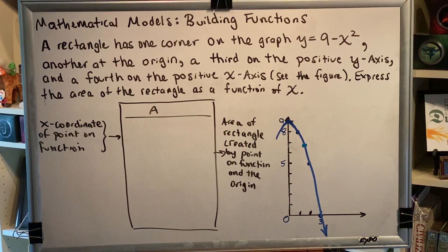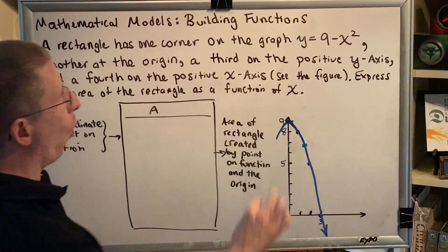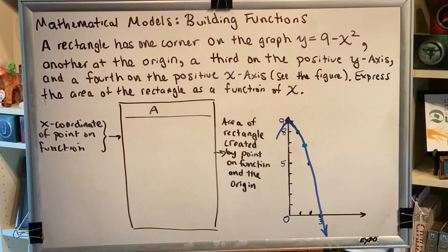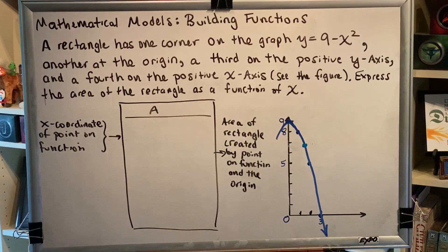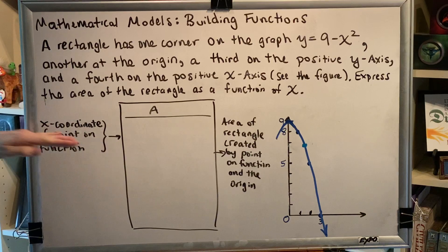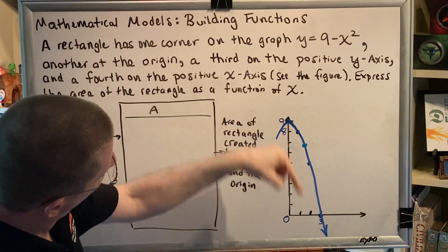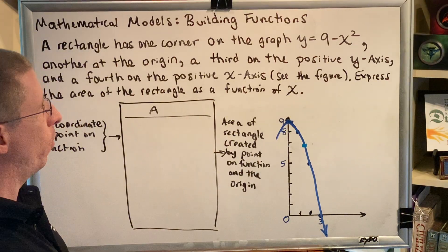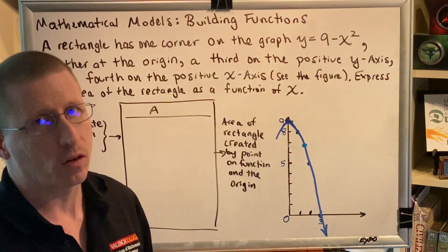Here's the general idea. We don't know where along this blue parabola the point will be, but we have to program a computer to accept as the only input the x-coordinate of that point and deliver as an output the area of the rectangle it creates.